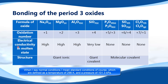Next we look at the structure and the electrical conductivity in the molten state. Sodium oxide, magnesium oxide and aluminium oxide have a giant ionic structure, with ionic bonds between the metal and the oxygen. Because they have ionic bonds, they are solid under normal conditions due to strong forces of attraction between the oppositely charged ions. When molten they have free moving ions, which makes them good electrical conductors. So the electrical conductivity in the molten state is high for sodium oxide, magnesium oxide and aluminium oxide.